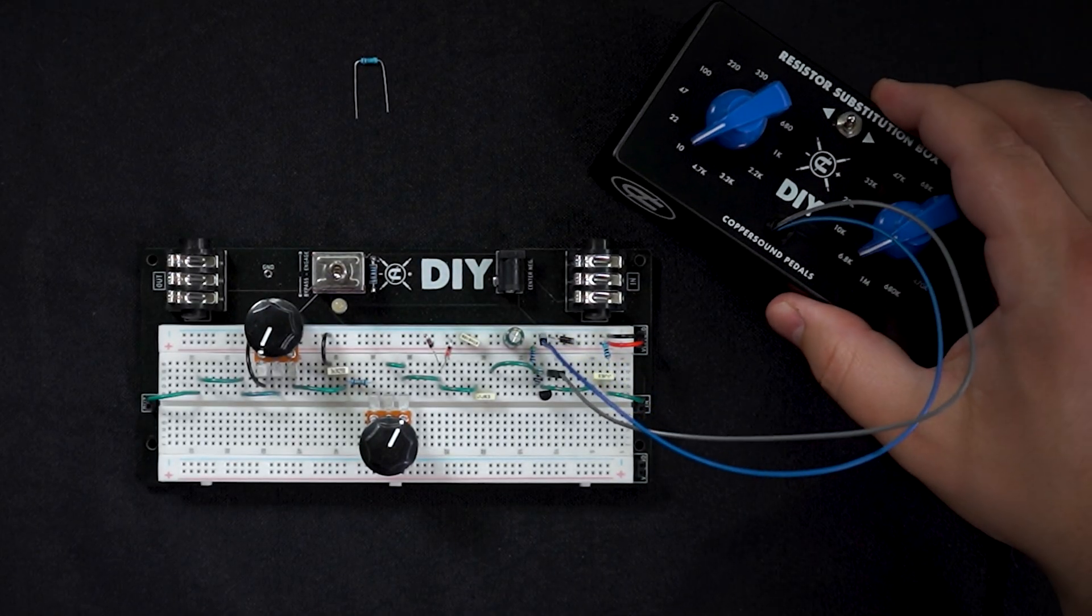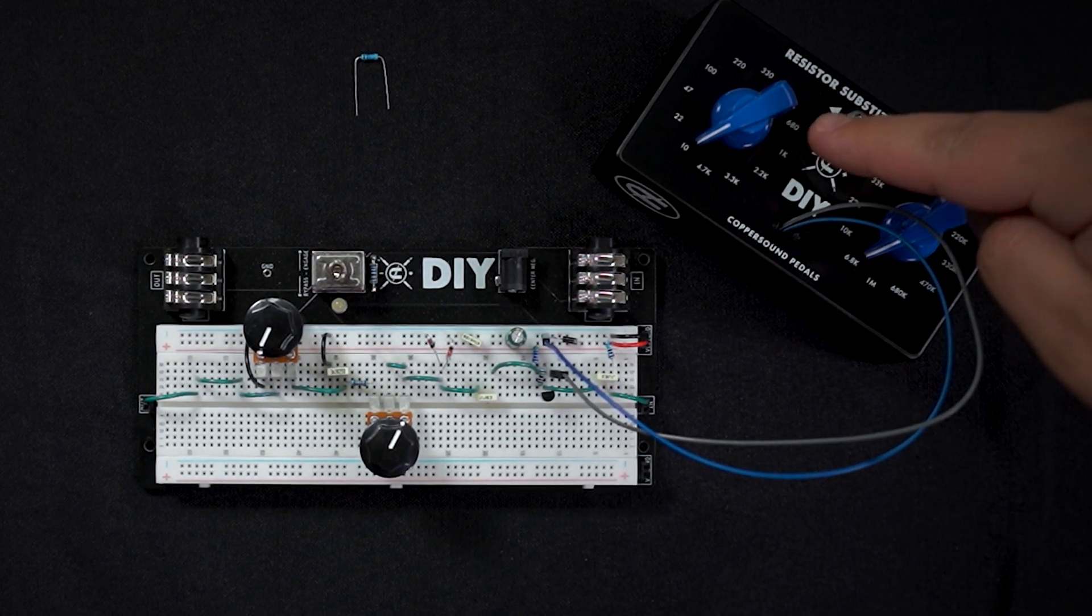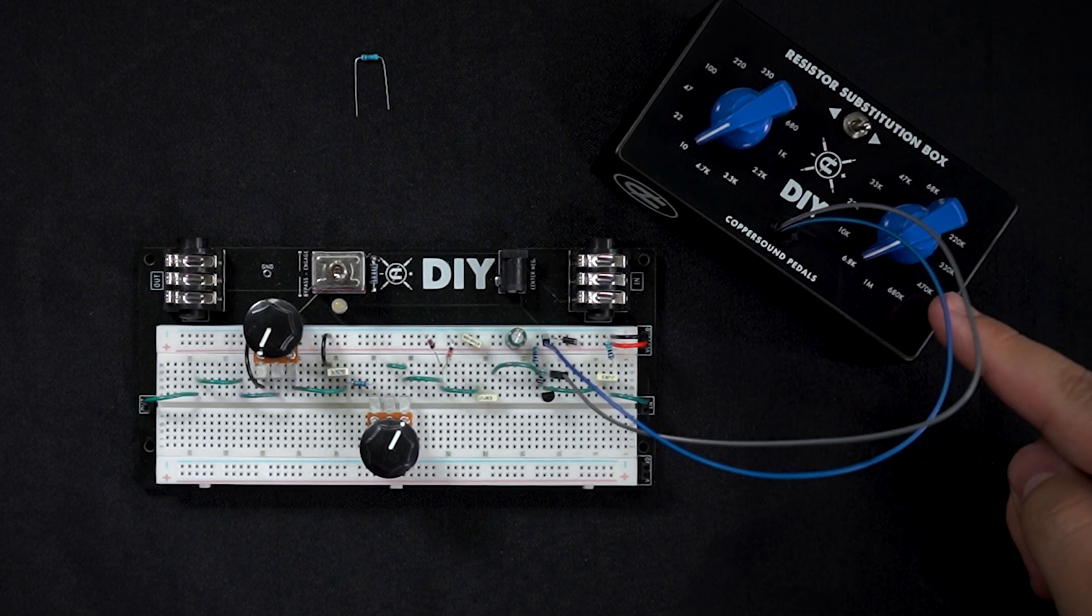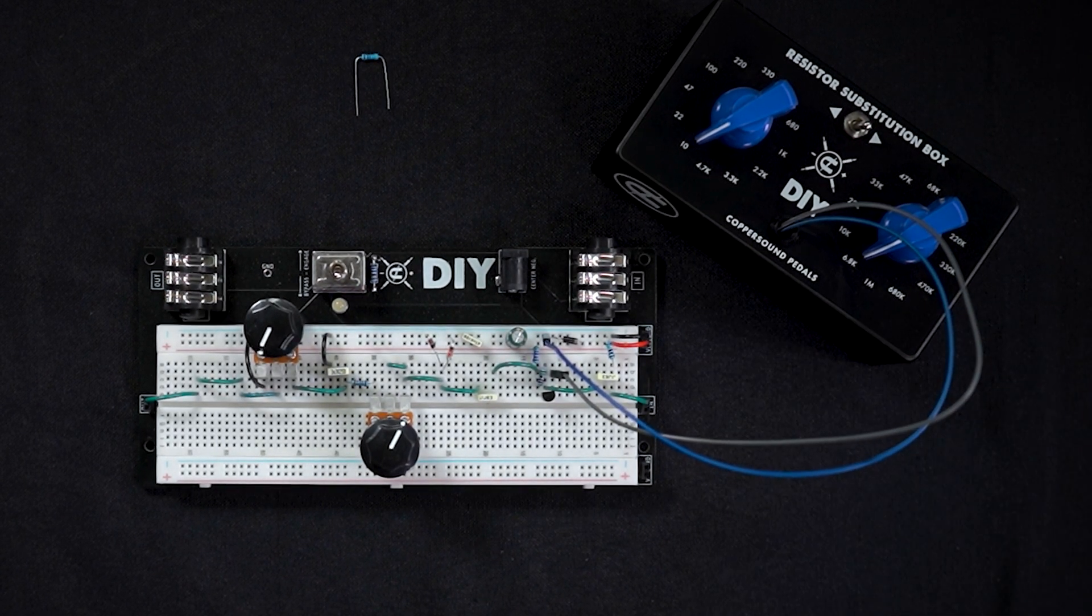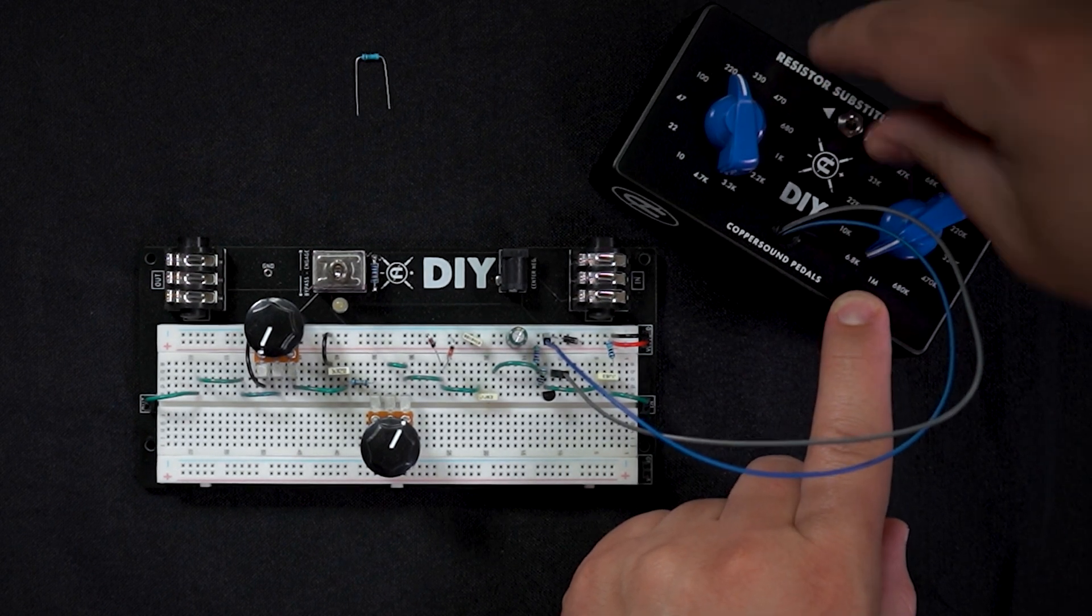Now with our sub box we can easily choose between 12 values on the left side, 12 values on the right side, and now we have 24 values that we can circulate through on the fly.